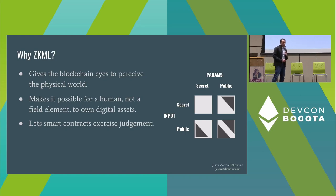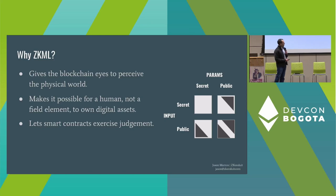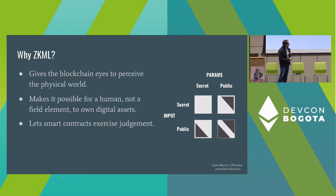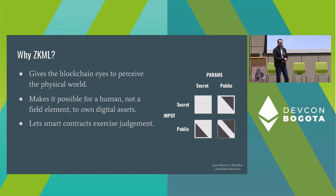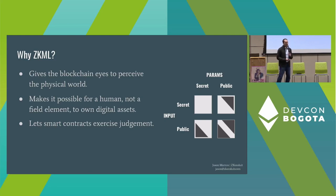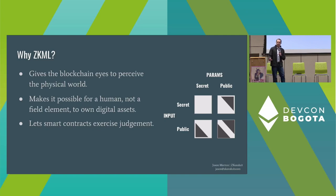You can think about ZKML as a way to let smart contracts exercise judgment — deal with any kind of ambiguous situation, decide if a contract is satisfied, decide if a news story says that a hurricane has hit the coast. This chart is a reminder that both the input and the parameters can be either private or public, and all four of those squares are interesting. If everything's public, we can think about a scalable news oracle. If everything is private, maybe we're thinking about decentralized Kaggle, or a medical situation where the model and patient data both need to be kept secret.